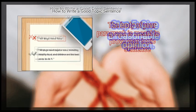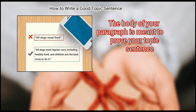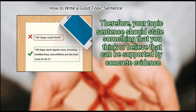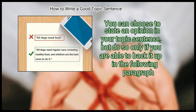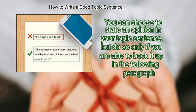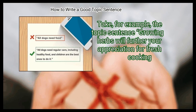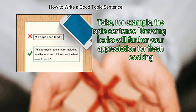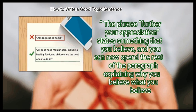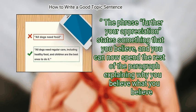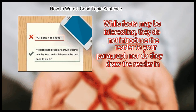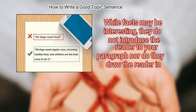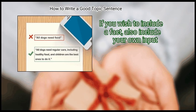Step 5: Give a reasonable opinion. The body of your paragraph is meant to prove your topic sentence. Therefore, your topic sentence should state something that you think or believe that can be supported by concrete evidence. You can choose to state an opinion, but do so only if you are able to back it up in the following paragraph. For example, 'growing herbs will further your appreciation for fresh cooking' states something you believe, and you can spend the rest of the paragraph explaining why.